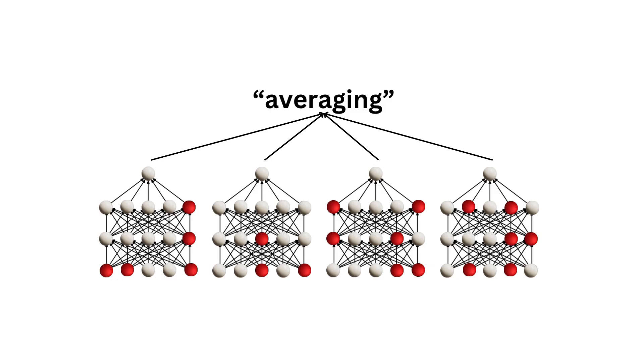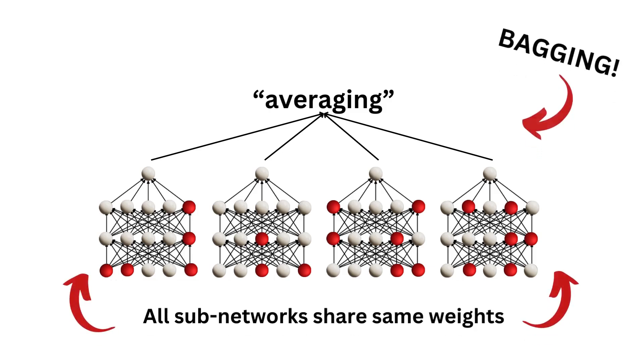Now, during the testing phase, it's as if we are averaging the output of all the permutations of networks together, with the added twist that all the network trains share the same weights. This is in a nutshell what bagging is, an ensemble method to increase accuracy on a task by using the output of multiple trained models.